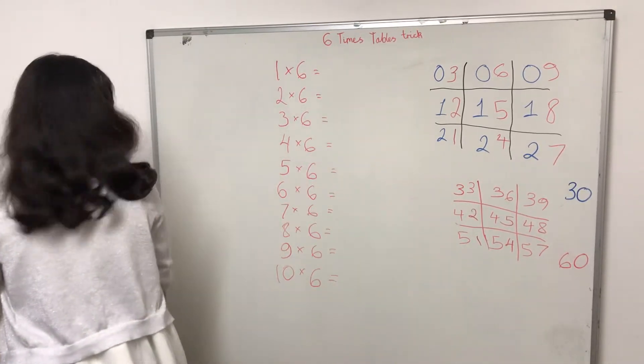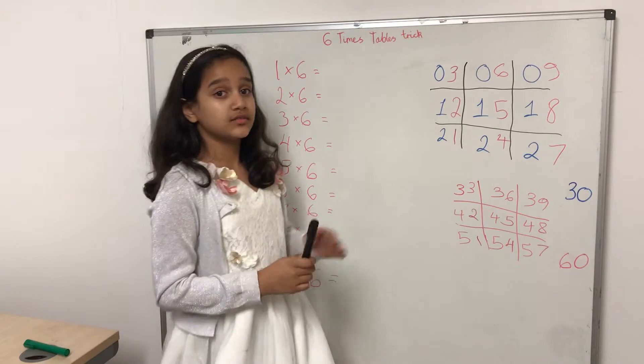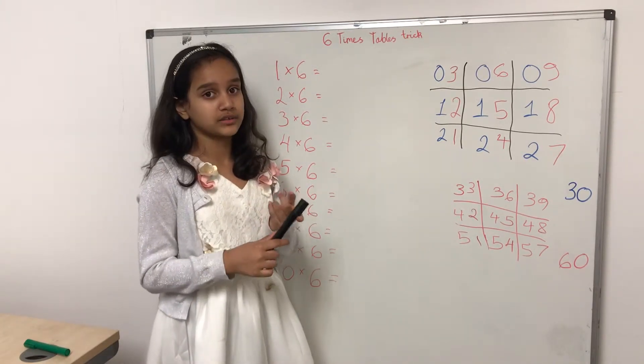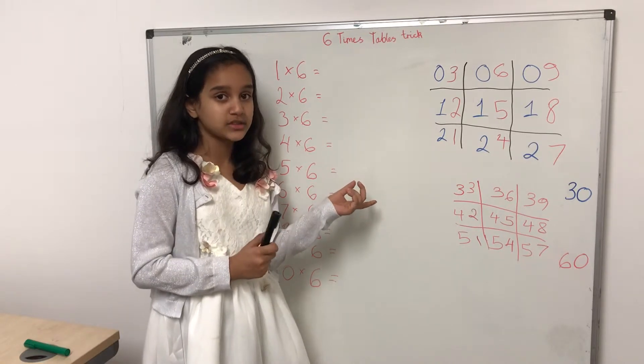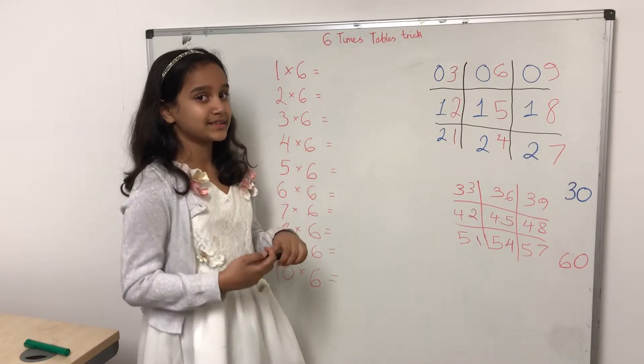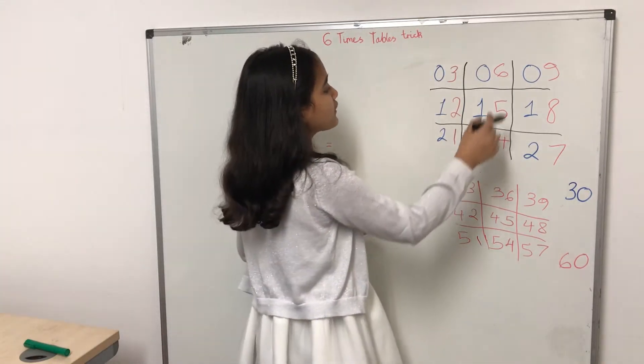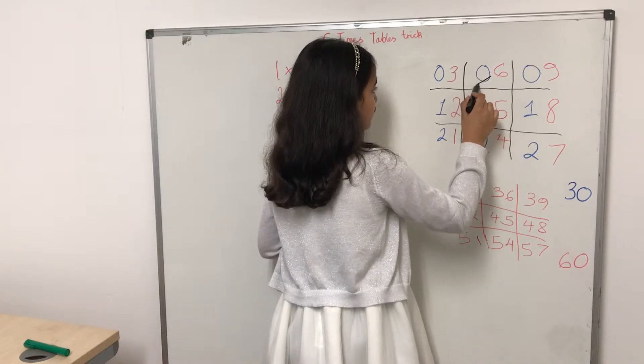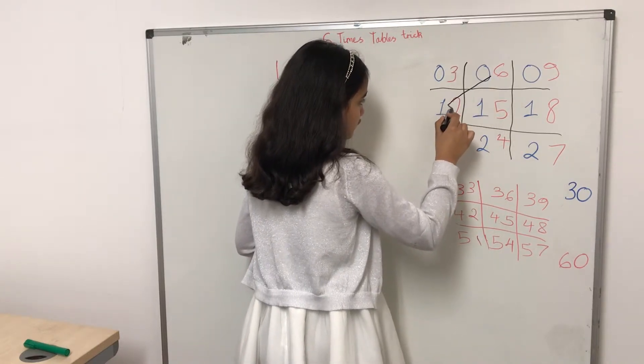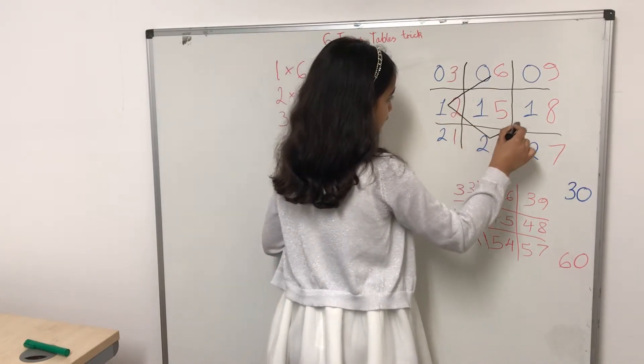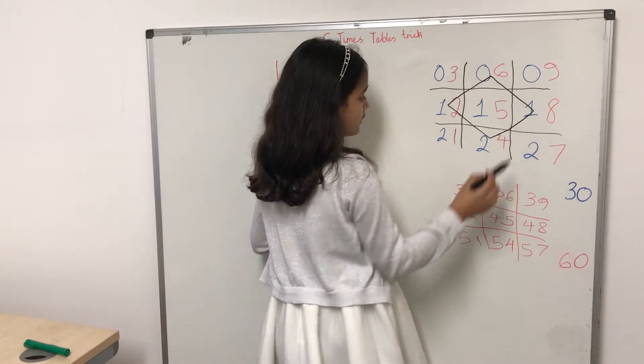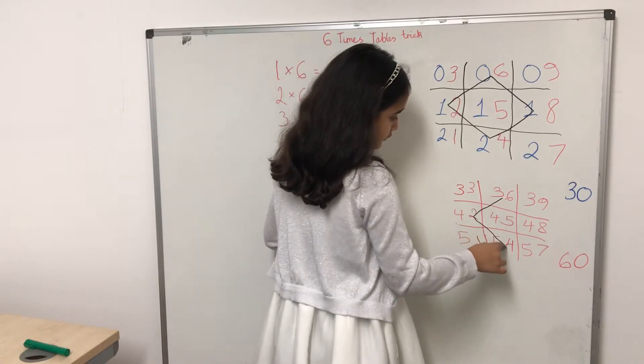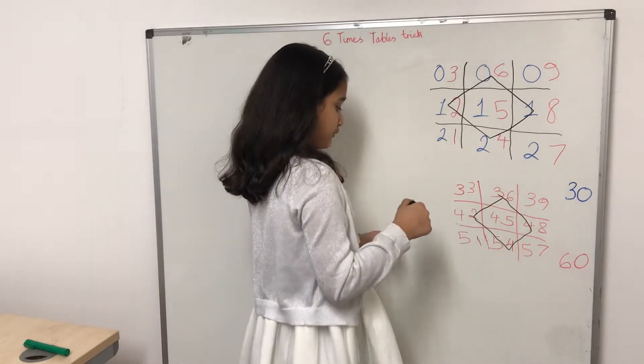And now, if you notice, right now we've drew the three times tables. Now, watch this. We're going to turn the three times tables into our six times tables. So, in the middle of the tic-tac-toe grid, you'll draw a diamond. Same thing on the second tic-tac-toe grid.